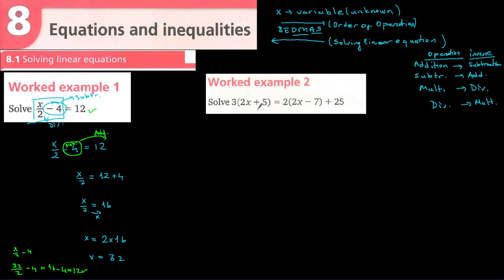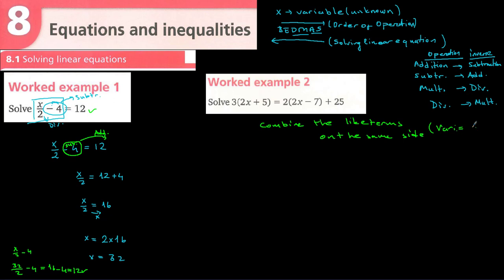Let's continue with a different type of exercise. For this type, we first combine like terms — that means collecting variables on one side and constants or numbers on the other side.